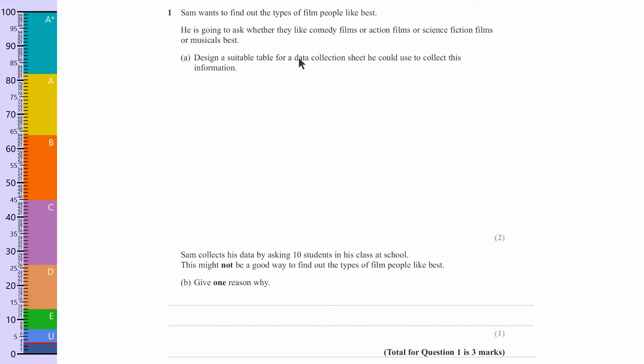Okay, looking at the first question, it's asking us to do a data collection sheet, which is just a posh way of saying a tally chart. But it wants us to do types of film and it gives us the genres: comedy, action, science fiction and musicals. So those are the ones that we want to highlight in our data collection sheet.